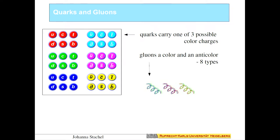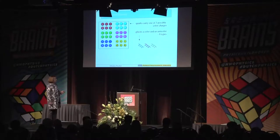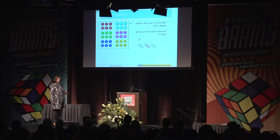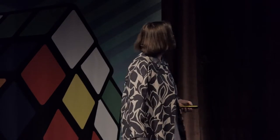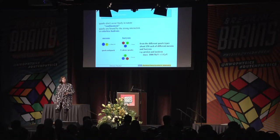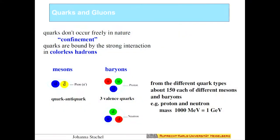One important thing about the strong interaction: in addition to electric charge, quarks also carry one of three possible color charges — red, green, blue — and anti-quarks have the corresponding anti-charge. Very differently from electromagnetism, the gluon also carries color — in fact a color and an anti-color — and there are eight different types of gluons that mediate the strong interaction. Quarks don't occur freely in nature; they have been searched for and never found. They are confined — bound by the strong interaction into colorless hadrons.